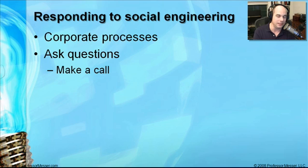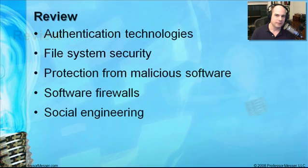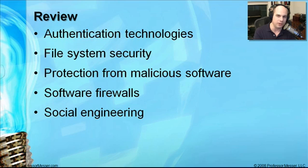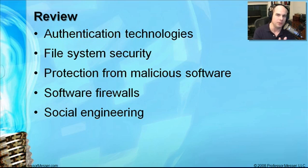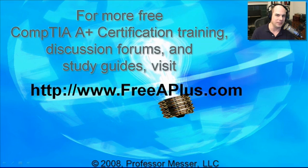Given the environments these days with identity theft, these are very simple things to do to resolve these issues. In review, we've looked at a lot of different security overviews — authentication technologies covering something you know and something you have, file system security, protection from malicious software, the different types of protections available with antivirus, anti-spyware, and software-based firewalls, and finally social engineering and some of the things you might expect to see in our environments today.